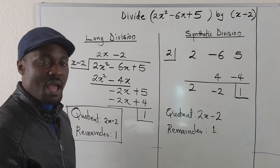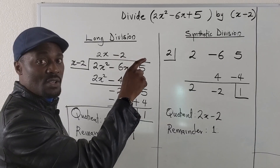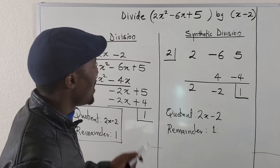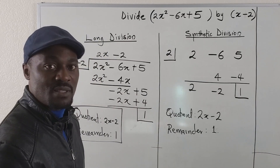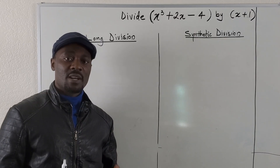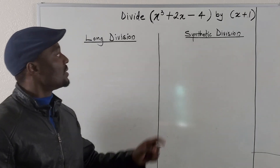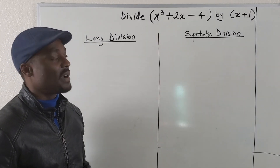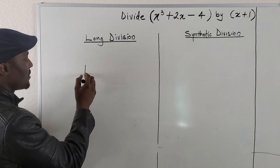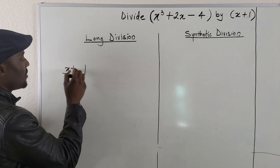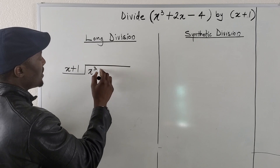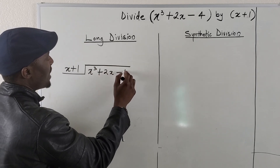You can play this back again. I'm going to change the questions so you can have another example. So now we have another question, and this one says x cubed plus 2x minus 4 divided by x plus 1. We're going to have x plus 1 out here, and under this, we're going to have x cubed plus 2x minus 4.